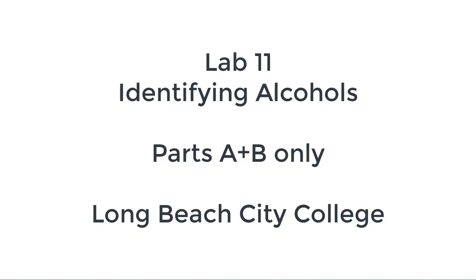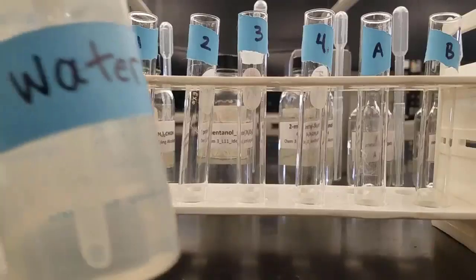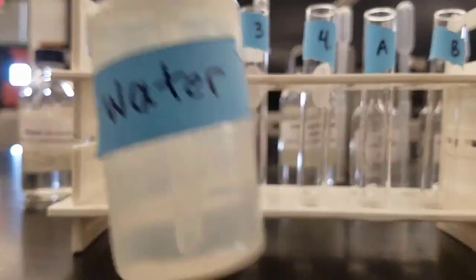Today we're going to be doing lab 11, identifying alcohols — just the first two parts. The first part we're going to look at is the solubility of alcohols in water and in hexane. Notice that one through four are our standards, and A and B will match one of those. As the experiment begins, we have six test tubes.